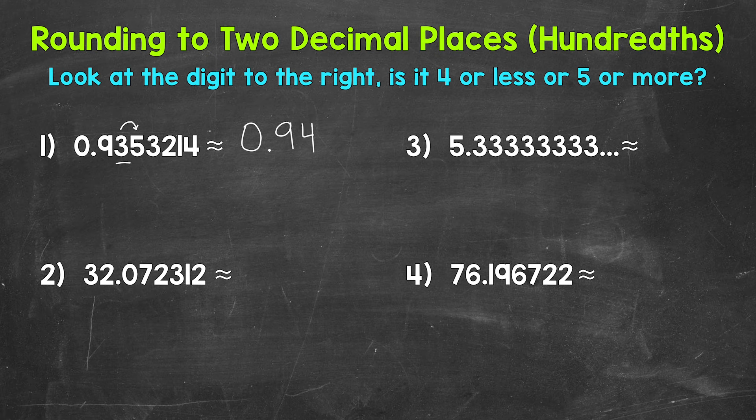So, our original decimal is approximately or rounds to ninety-four hundredths. We can think of this as cutting the decimal off after two decimal places. So after the hundredths place. And we do this by rounding.